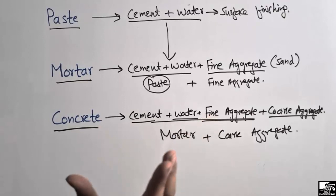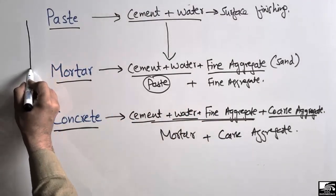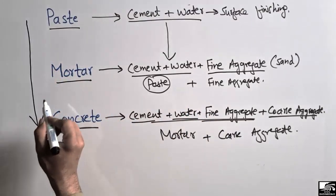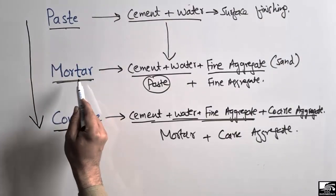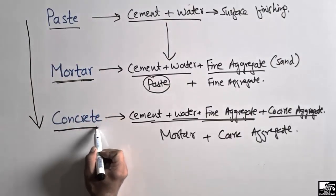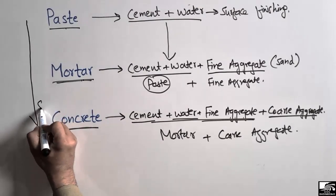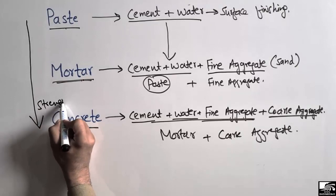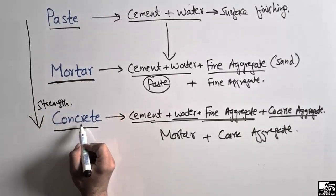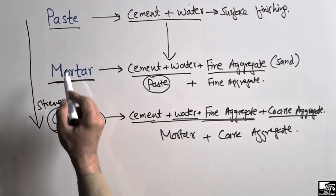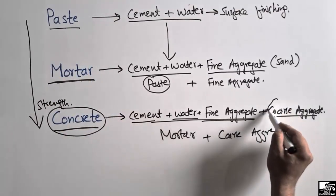It should always be kept in mind that the strength of these materials increases in this order: paste has the lowest strength, mortar has higher strength than paste, and concrete has the highest strength of the three. So strength increases from paste to mortar and then to concrete. Concrete has maximum strength due to the addition of coarse aggregate.